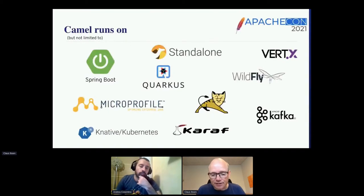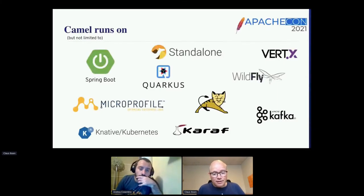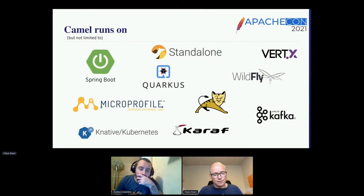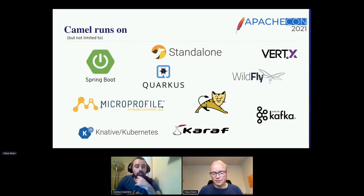Camel is just a library, so you can run it on any popular Java-based runtime: Apache Tomcat, Spring Boot, and more recently Quarkus — which has another talk later today by Alexander. There's also support for cloud on Kubernetes and other Apache software products like Kafka and Karaf. At the end of the day, Camel is just a set of JARs, so you can run it on any JVM.